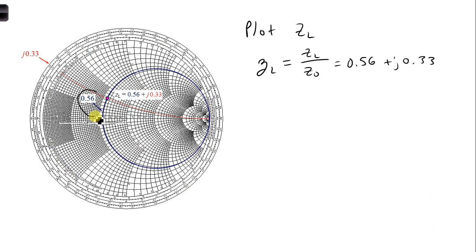So here we find the R equal 0.56 circle, and where that intersects the 0.33 arc, here is our plotted load impedance.